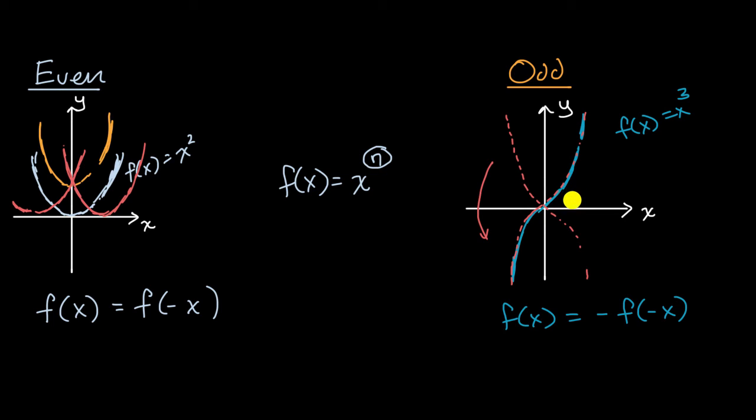Similarly, if we were to shift this f of x, if we were to even shift it up, it's no longer odd. So if this is x to the third, let's say plus three, this is no longer odd. Because you flip it over once, you get right over there. But then you flip it again, you're going to get this. You're going to get something like this. So you're no longer back to your original function.